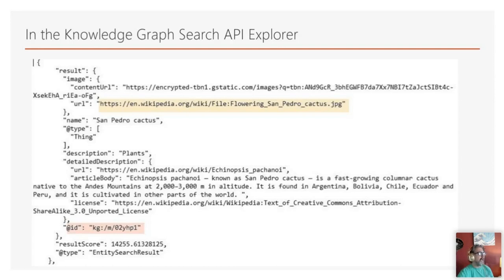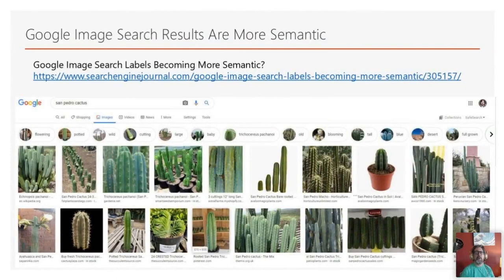This is Google indexing real-world objects instead of just images or pages. If you go to Google image search and search for something like a San Pedro cactus, not only do you see lots of images, but at the top you see categories showing different views and aspects of these entities — what they look like in a desert, fully grown, blooming, and so on. These are different aspects, what Google refers to as an ontology — different aspects of an entity that are related to each other.